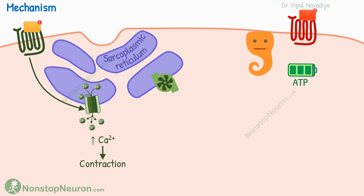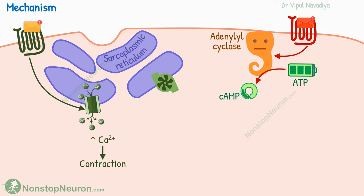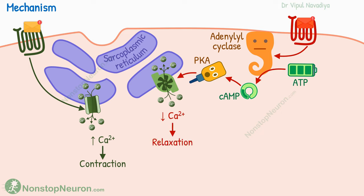In some cases, receptor activation causes the activation of enzymes called adenylyl cyclase or guanylyl cyclase. They produce molecules like cGMP. These molecules, after a series of events, activate pumps that move calcium out of the cell or into the sarcoplasmic reticulum. Decreased cytosolic calcium leads to muscle relaxation.